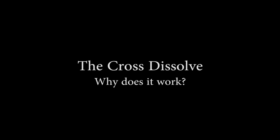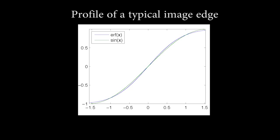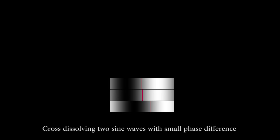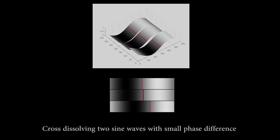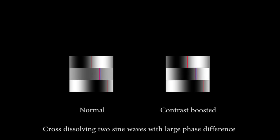A cross dissolve is a linear blend between two images. Cross dissolves can produce strong motion effects, as in this example where the mouth and nose appear to move realistically. We explain this effect by considering image edges. We approximate an edge as a portion of a sine curve. Cross dissolving two shifted sine waves produces a true translation of the sine. The red line shows the position of the edge and the blue line shows a constant velocity shift for reference. The 3D plots show intensity as height. Larger shifts produce a decrease in contrast during the transition and non-linear dynamics. Here we boost the contrast to better see the non-linear ease-in, ease-out motion dynamics.